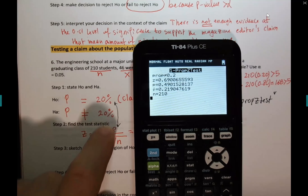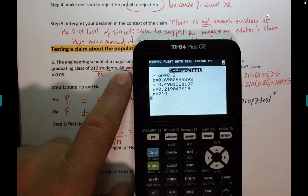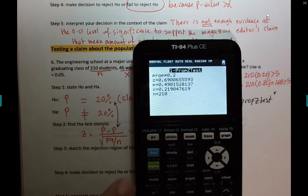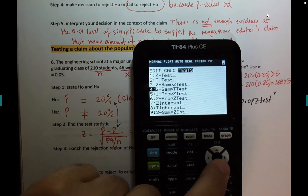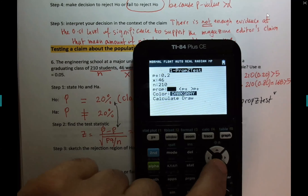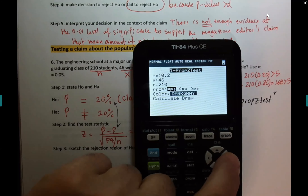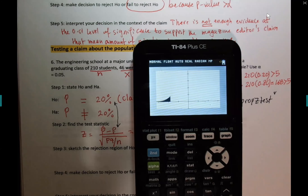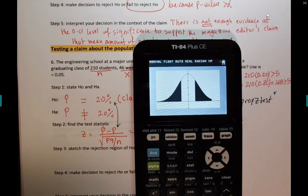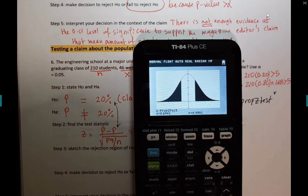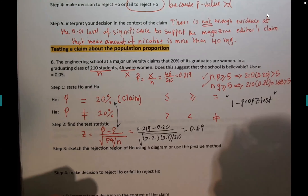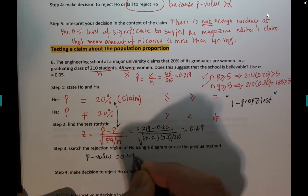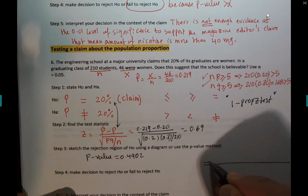If I show you the visual: p-value low, H0 must go — but if p-value is high, H0 will stay, we cannot reject H0. The p-value is huge on both sides: 0.4902. He wants me to sketch the p-value.